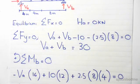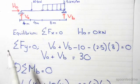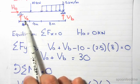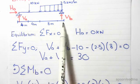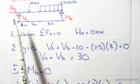And this gives us minus VA times 16. This vertical force here, we multiply by 16 because of its lever arm. And it's negative because it causes a clockwise moment.